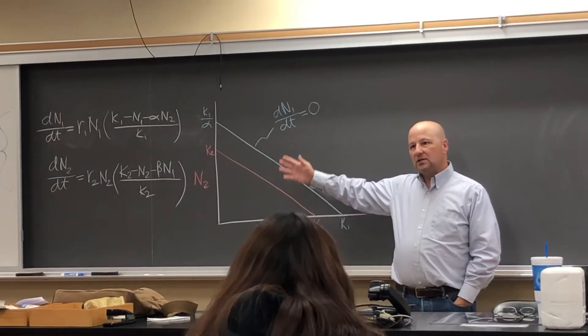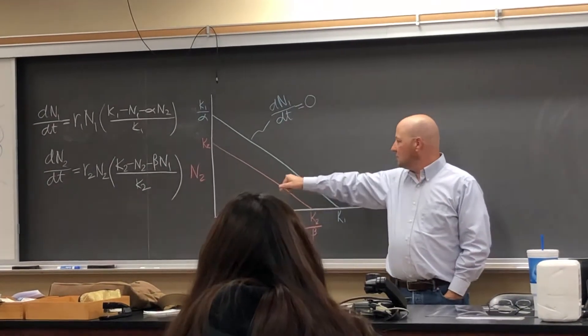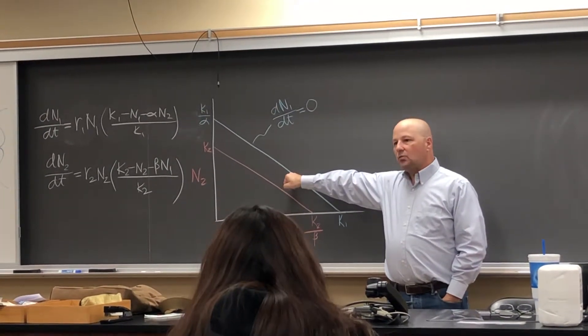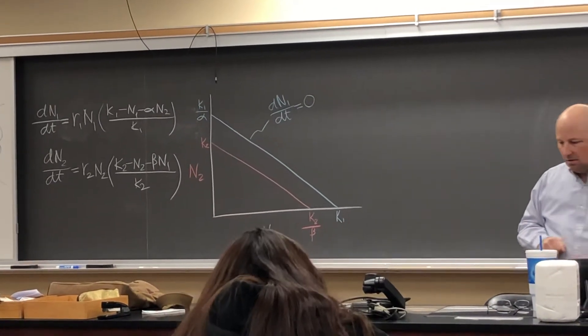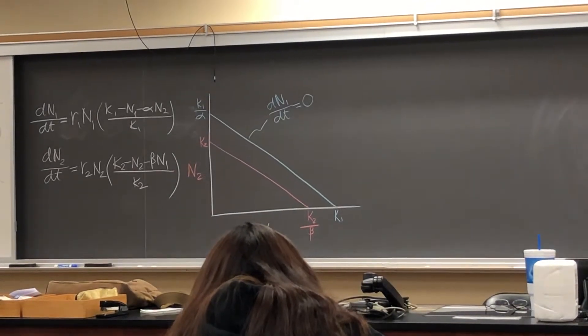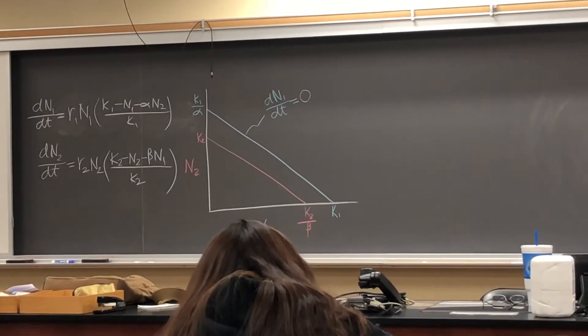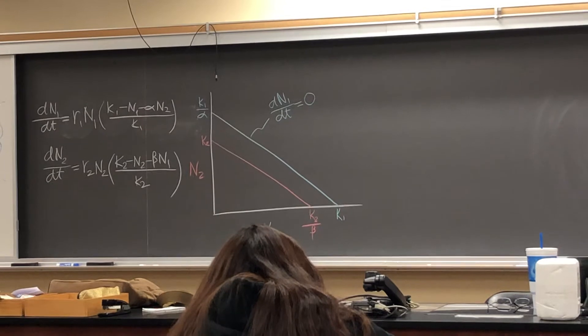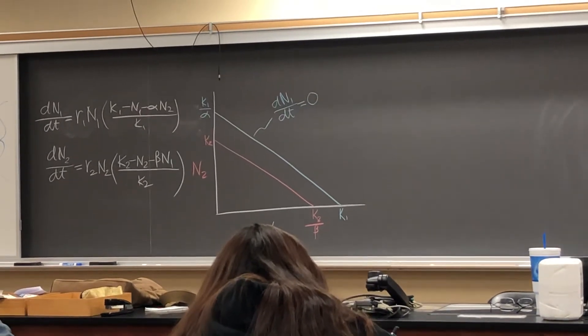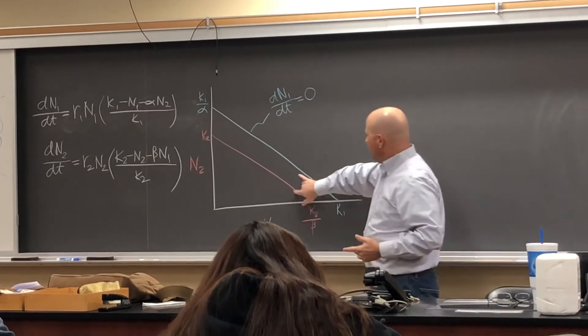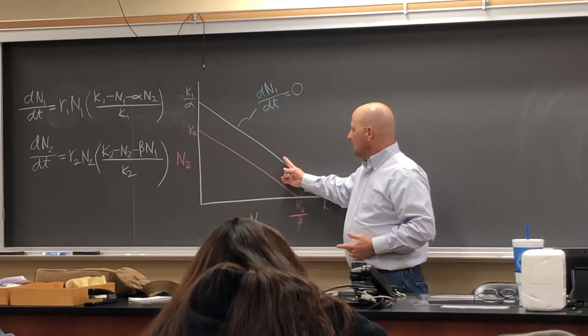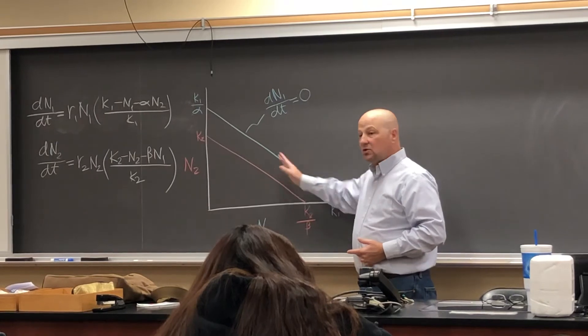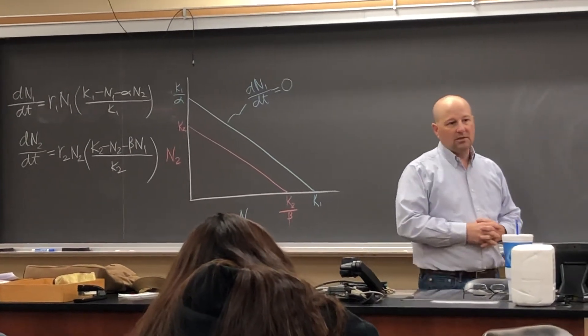So in this particular instance, in this environment for these populations, species one always outcompetes species two and they become excluded from that particular habitat. And we talked about last time that if these two were flipped so that the red was on top, that then that would represent species two competitively excludes species one.